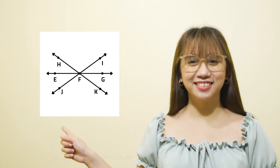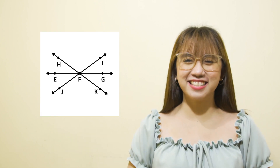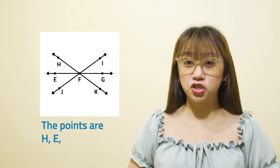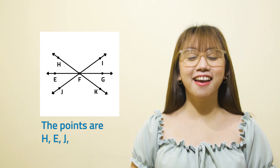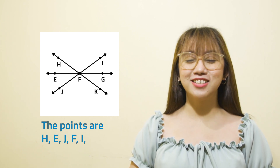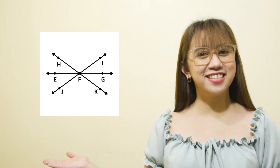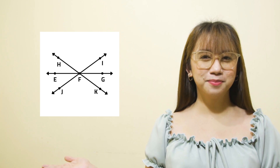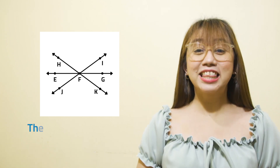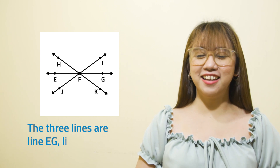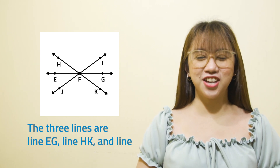Can you name all points here? The points are H, E, J, F, I, G, and K. Now, can you name all three lines here? The three lines are line EG, line HK, and line JI.